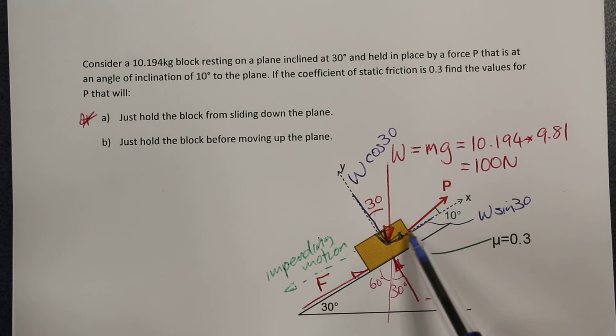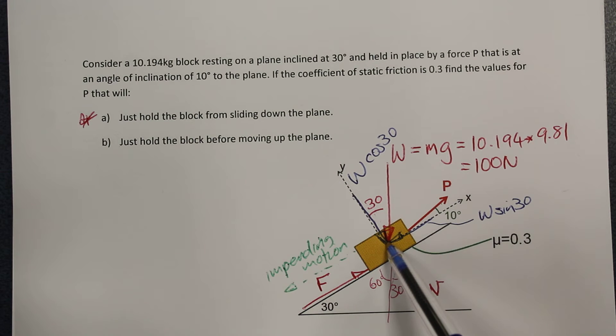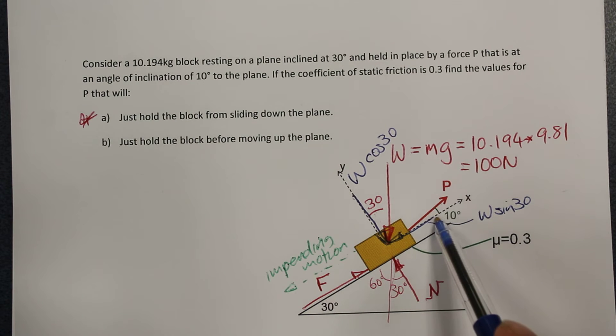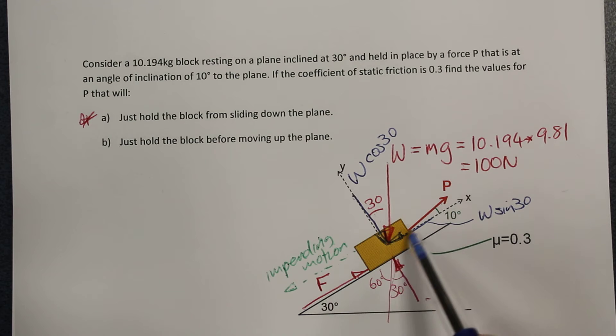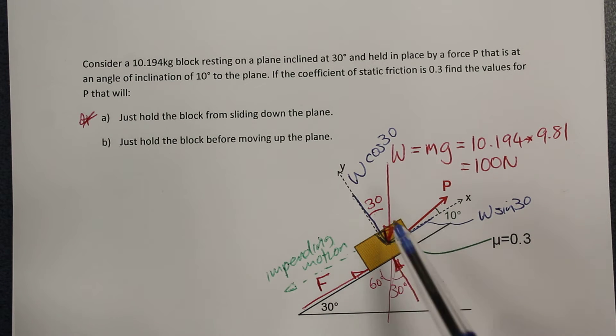P can be broken up in a similar way: the component along the x direction will be equal to P cosine 10, and the component in the y direction will be P sine 10.